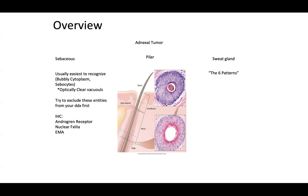Try to exclude certain entities first from your differential diagnosis. You can think about doing immunohistochemistry for antigen receptor or EMA. Pilar tumors are going to recapitulate the follicle, so you may have areas that resemble the matrical area, the outer root sheath, or where you have trichilemmal keratinization. Adnexal tumors, particularly pilar differentiation, will have many different expressions. Sweat gland neoplasms are going to have different patterns that we will talk about.